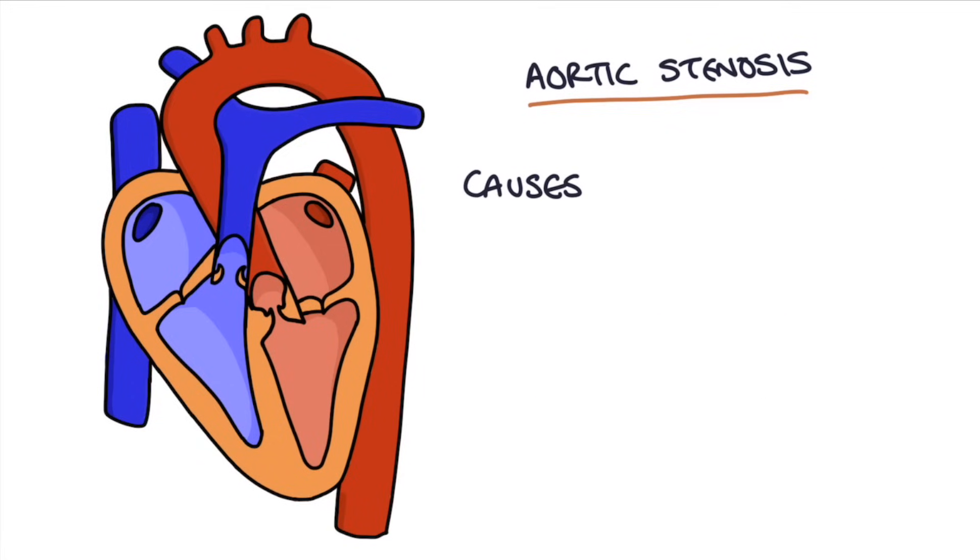The most common cause of aortic stenosis is just idiopathic age-related calcification of that valve. It's just the valve becoming older with age and calcifying, becoming hardened and narrowed. It can also be caused by rheumatic heart disease.